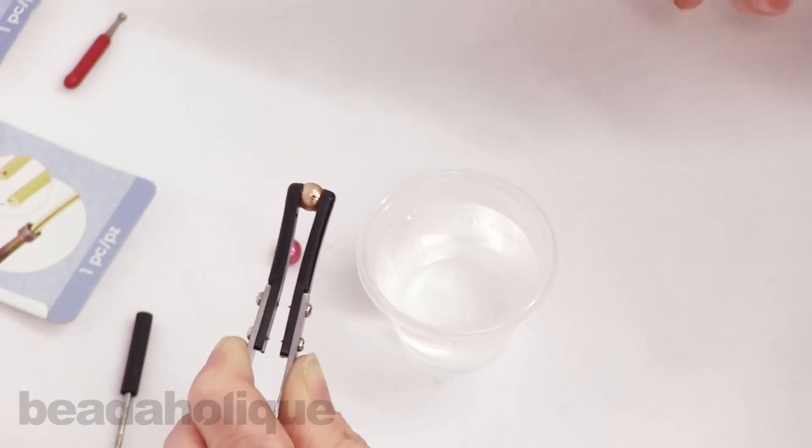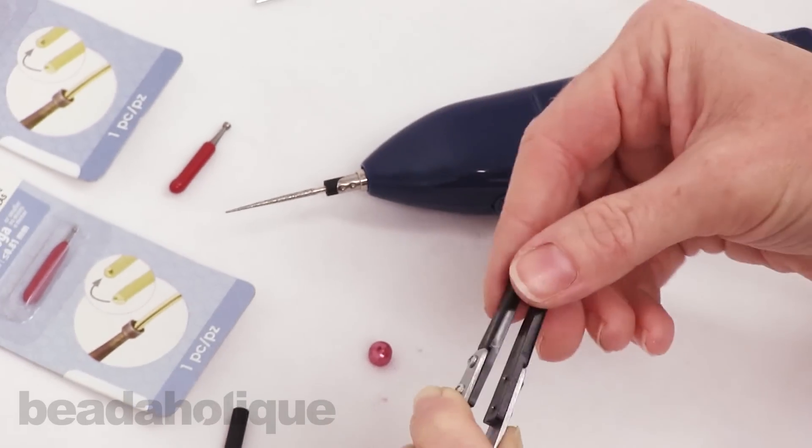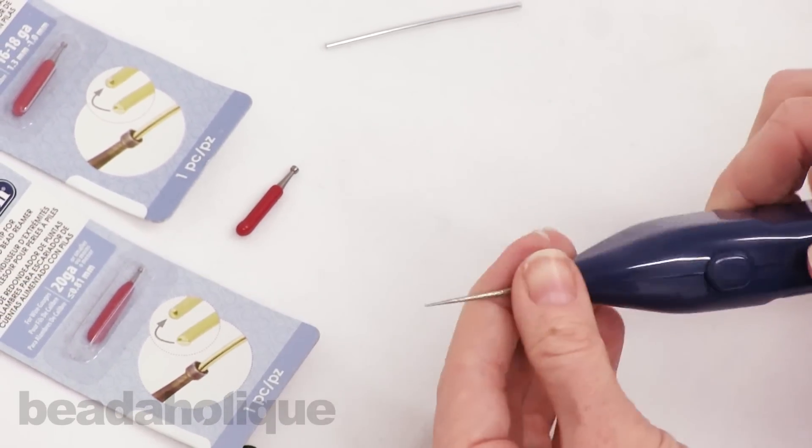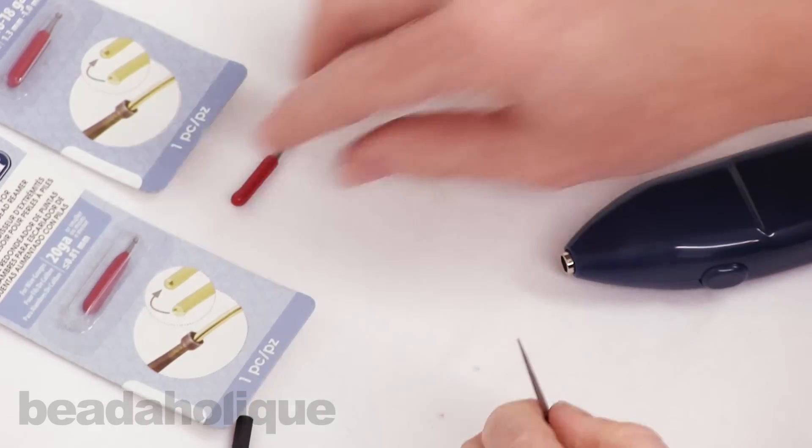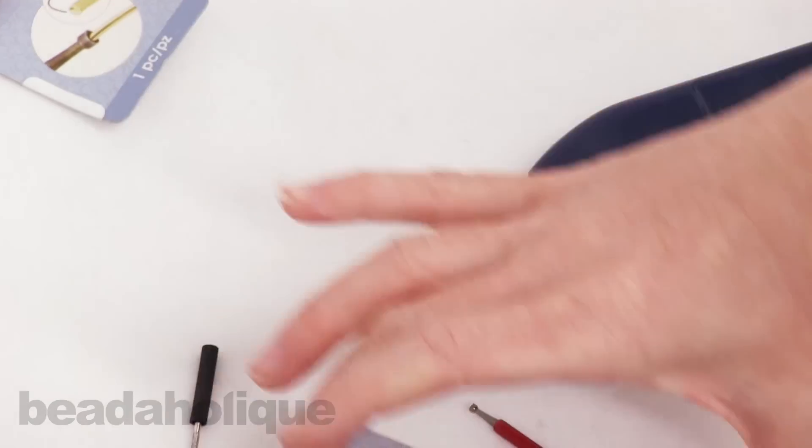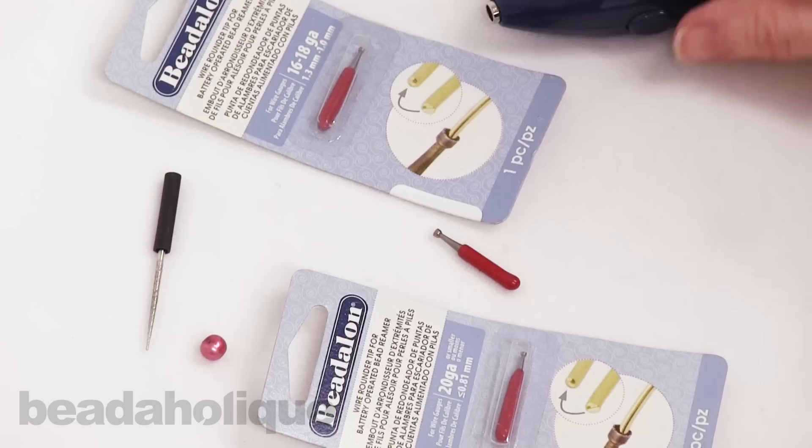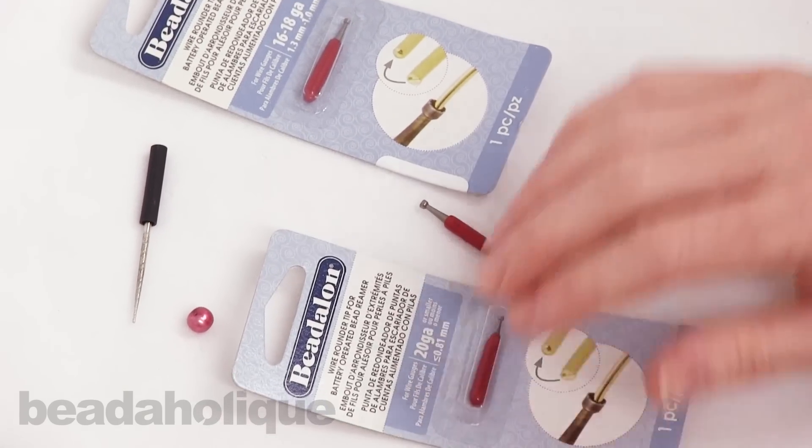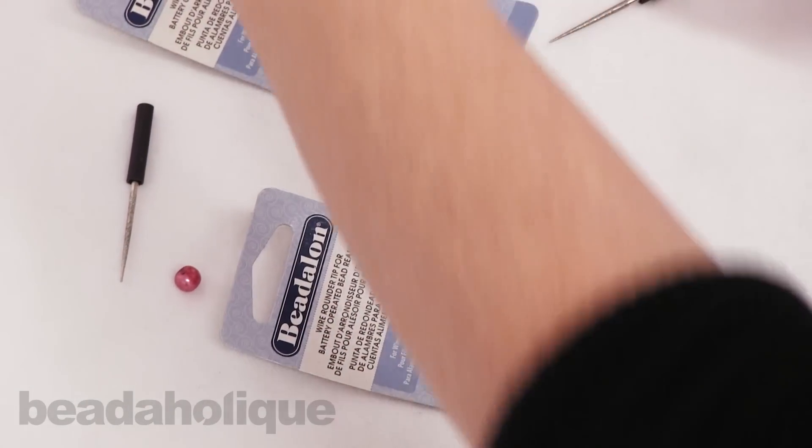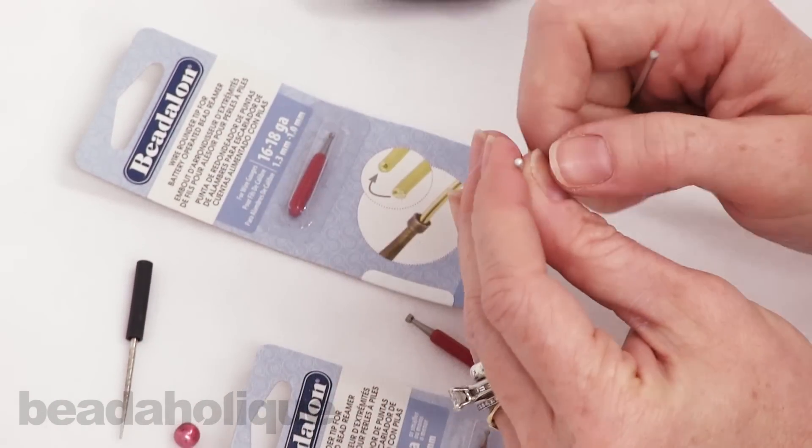So that is one use for this tool and there is another use I want to show you as well. So if I take this tip out, there are these other tips available. These are by Beadalon as well and these are wire rounder tips, and what they allow you to do is to round the tip of your wire.